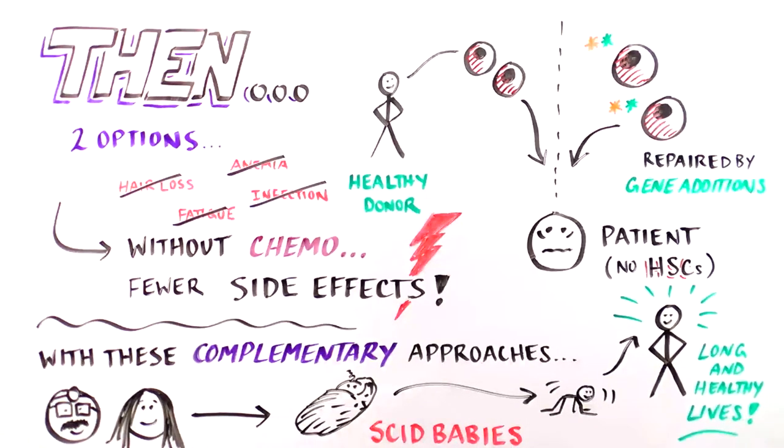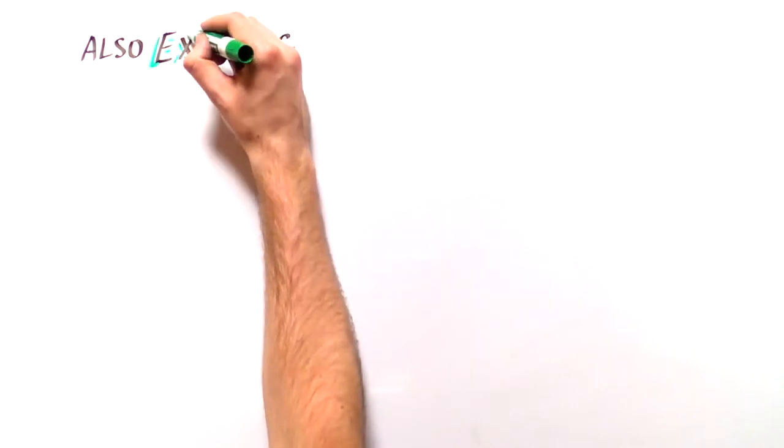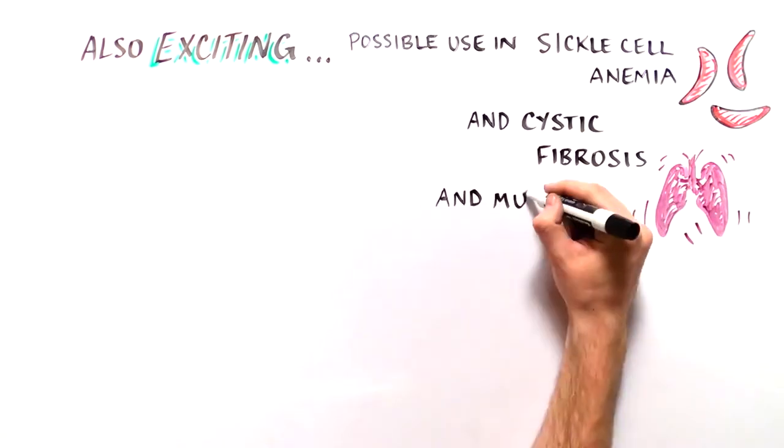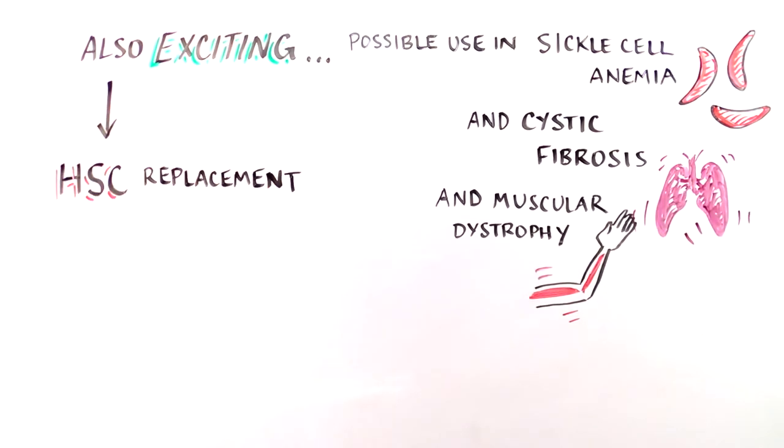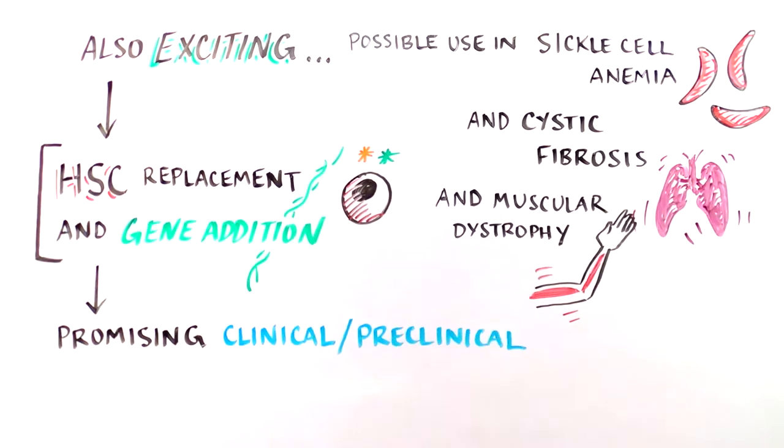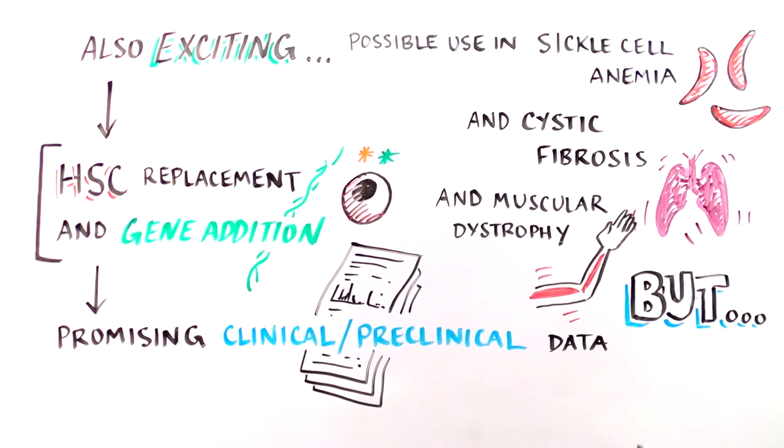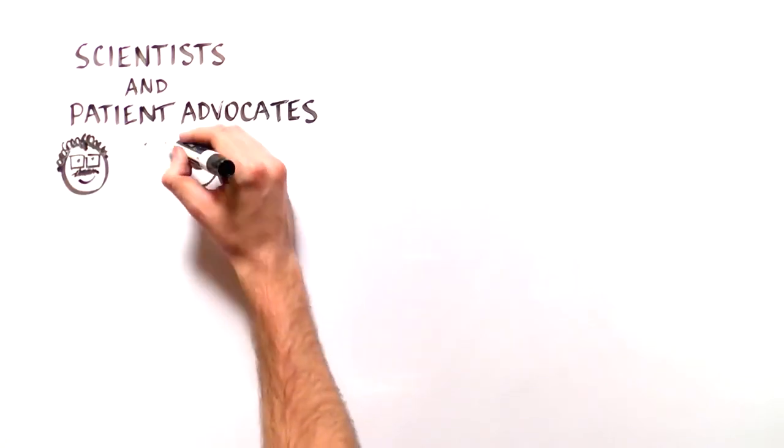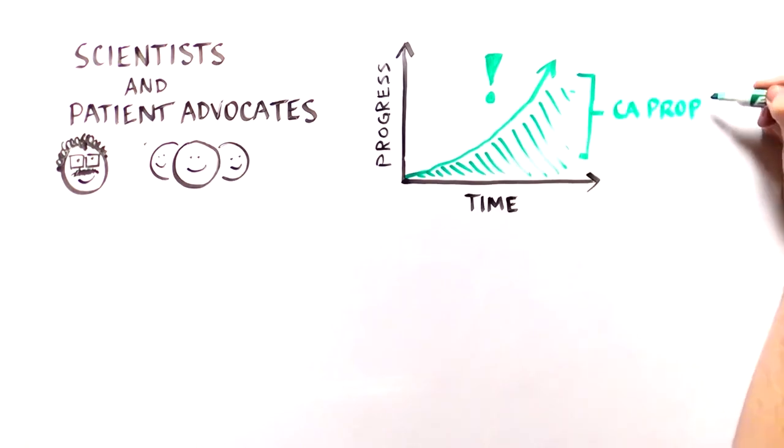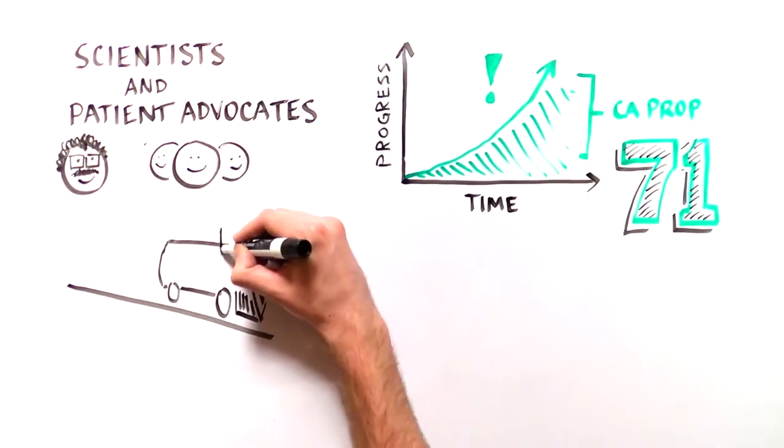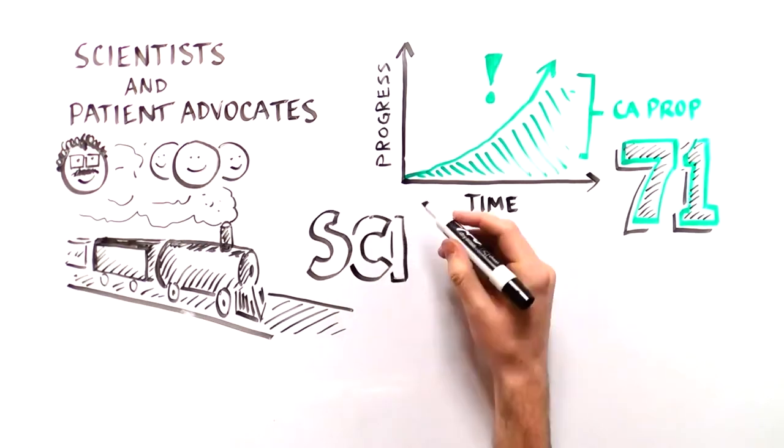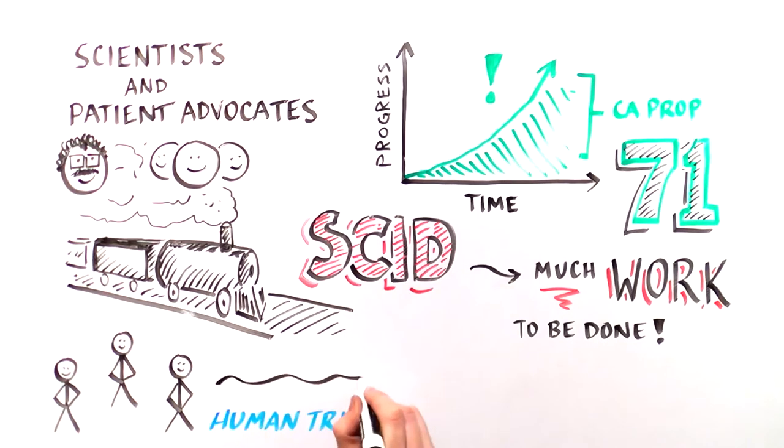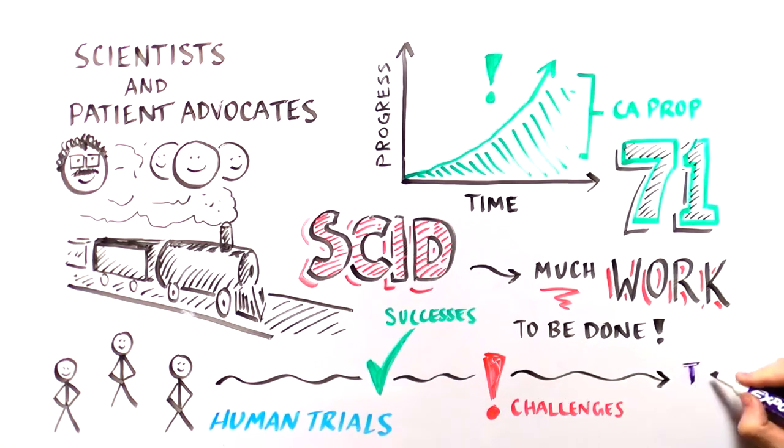And what's even more exciting is that similar gene therapy strategies might work for other diseases known to be caused by mutations in a single gene, such as sickle cell anemia, cystic fibrosis, and muscular dystrophy. So far, both the gene therapy and HSC replacement approaches have shown promising preclinical and clinical data. However, it is important to keep in mind that these results are still early, and the therapies must be tested further. As we build on the progress enabled by California's Proposition 71 and the funding agency it created, the California Institute of Regenerative Medicine, we must keep the momentum going. We now have more advanced tools to develop better ways to treat devastating genetic diseases such as SCID. Only with continued support for biomedical research can we increase our understanding of the therapeutic potential of stem cells and translate that understanding into meaningful treatments that help give patients their lives back.